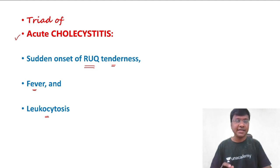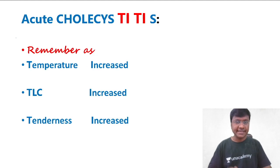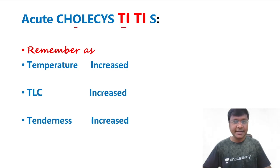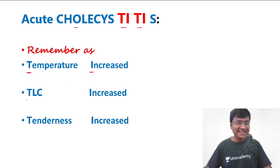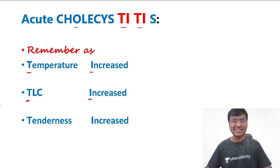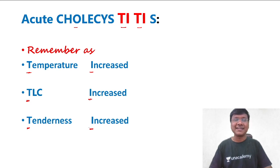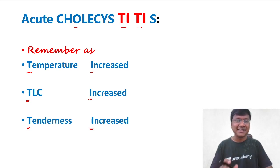How can you remember that in the form of a mnemonic? In acute cholecystitis, please remember TI three times: Temperature is Increased, that is fever; TLC is Increased, that is leukocytosis; and Tenderness is Increased, that is right upper quadrant pain. In this way, you can remember the triad of acute cholecystitis.